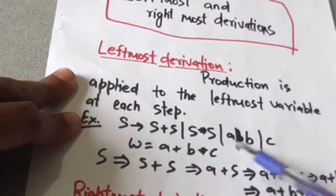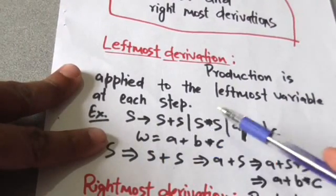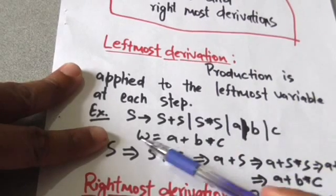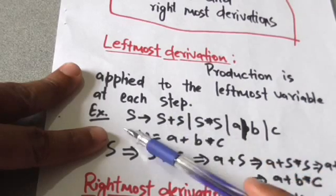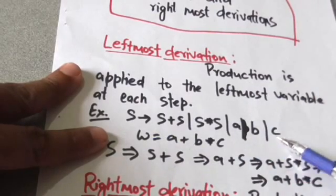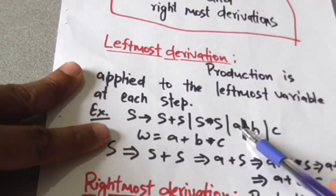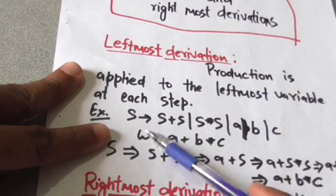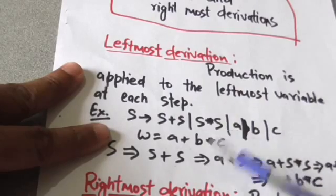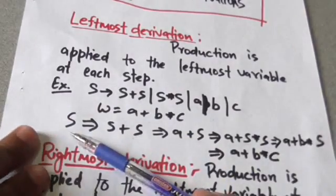Suppose these are the productions of some grammar and S is the start symbol. The terminals are: plus, and, a, b, and c. The production rules are: S derives S plus S, S derives S into S, S derives a, S derives b, S derives c. The string in the language of this grammar is W which equals a plus b into c.